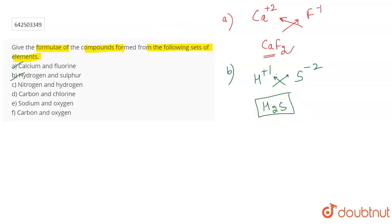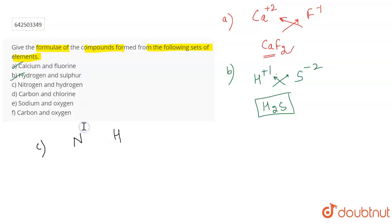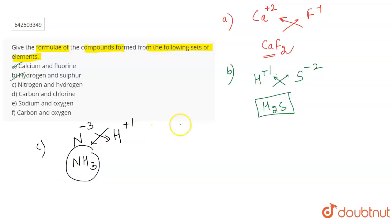For part C, you have nitrogen and hydrogen. Nitrogen has a tendency to gain three electrons, so it has a valency of -3. Hydrogen has a tendency to lose one electron, so it has a valency of +1. Interchanging the valencies gives the formula NH₃, which is the chemical formula for this compound.